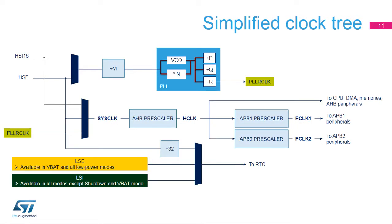The system clock can be derived from the HSI16 or from the HSE. The AHB clock, called Hclock, is derived by dividing the system clock by a programmable prescaler. The APB clocks, called PClock1 and PClock2, are generated by dividing the AHB clock by programmable prescalers. The RTC clock is generated by the LSE, the LSI, or the HSE divided by 32. The LSE can remain enabled in all low-power modes and in VBAT mode.